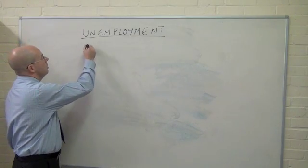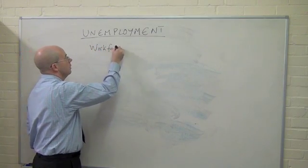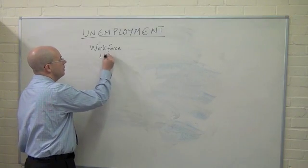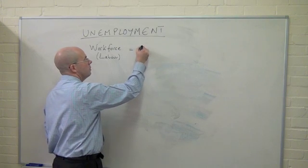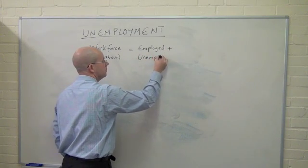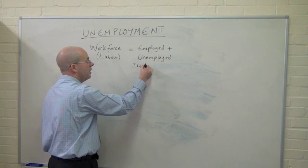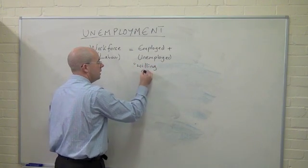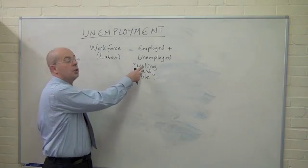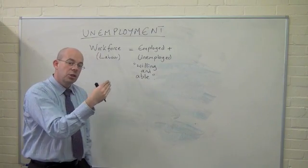When we talk about the unemployed, we talk about them as members of the workforce. The workforce, or the quantity of labour in the UK, includes those who are both employed and unemployed. So the unemployed are people without jobs, but they are defined as willing and able to work — meaning that if a job was offered to them, they would say yes, and they have the ability, in terms of maybe the right skills, to be able to get jobs in Britain.